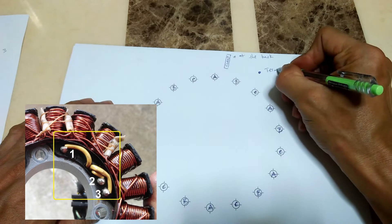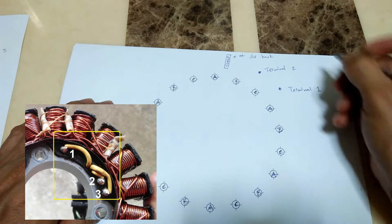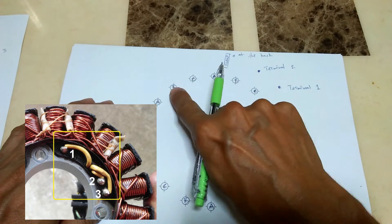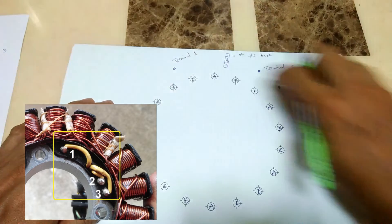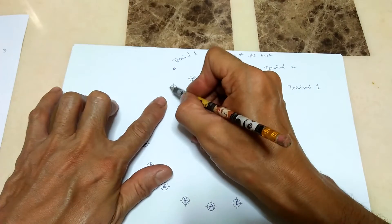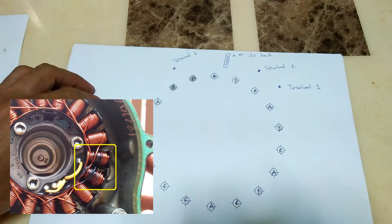I draw the location of the three terminals for reference and label them terminals 1, 2, and 3. These two poles I shaded are the poles I rewinded.